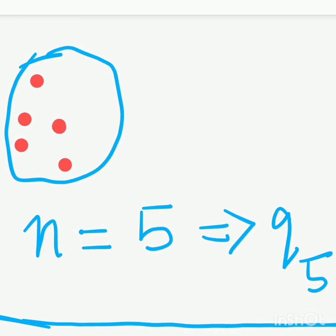Here, the system is composed of 5 particles. Therefore, n is equal to 5. In generalized coordinates, we have to represent it as q5.